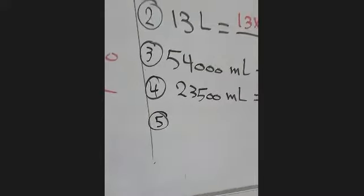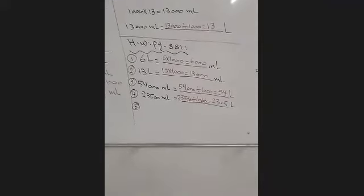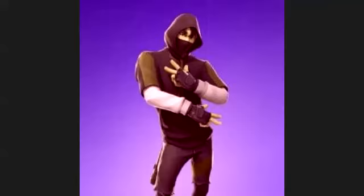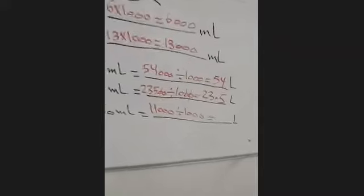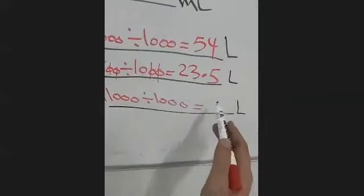This is question four. Question five: 11,000 milliliters equals how many liters? We have 11,000 divided by 1,000. Cross the three zeros — it's still 11 divided by 1, which equals 11 liters.